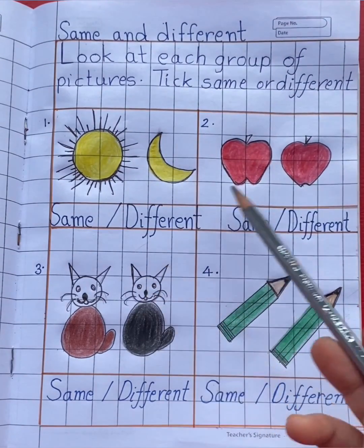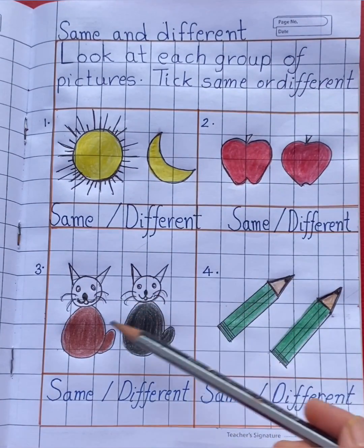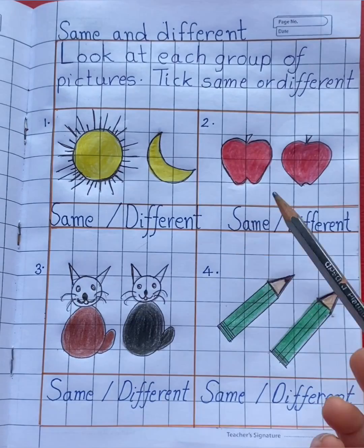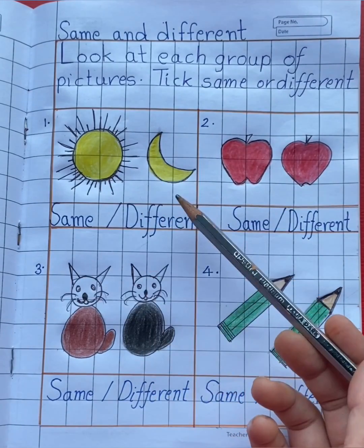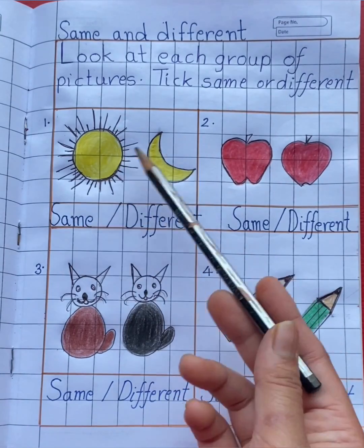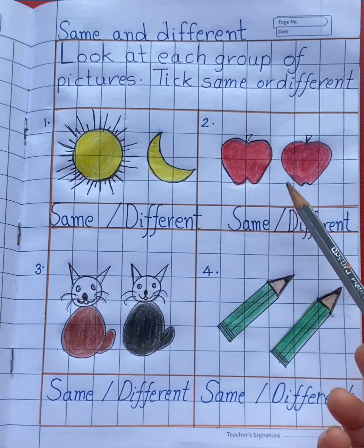Three, four - four groups. In each group you can see one, two - two pictures. You have to compare both pictures. If the pictures are same, you will tick same. If the pictures are different, you will tick different.